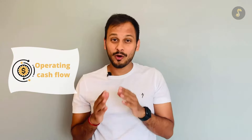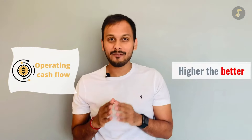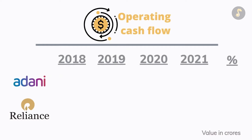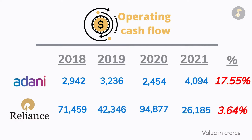Going on with the third parameter which is operating cash flow. This parameter ka assessment is also higher the better — matlab jis ka cash flow growth zyadha hai, woh stock better hai. Adani Enterprises ka cash flows has grown at an average pace of 17.55% per annum, while Reliance ka operating cash flow has grown at an average pace of 3.64% per annum. Hence Adani Enterprises is leading in this aspect.